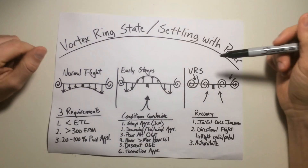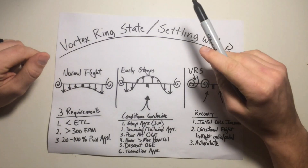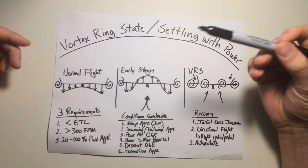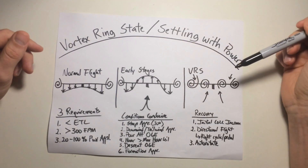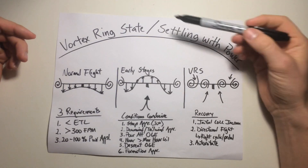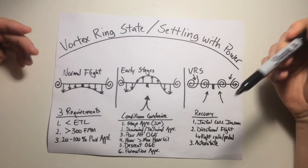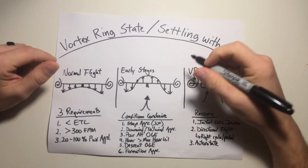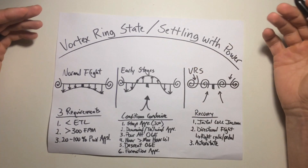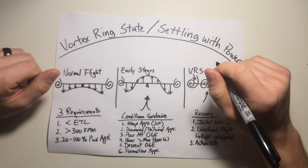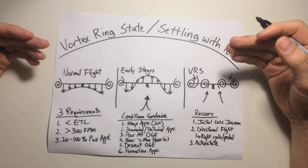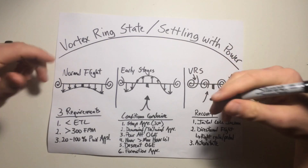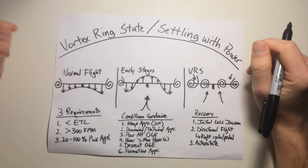That was vortex ring state and settling with power. Vortex ring state is quite literally the state of vortices engulfing the rotor system; settling with power is the result of continued flight in a vortex ring state where the helicopter settles into its own downwash and turbulent air. That wraps up the subject for today. Hope you enjoyed the video and it helped answer your questions. Make sure you hit like and subscribe below, and as always, safe flying. Thanks for watching.